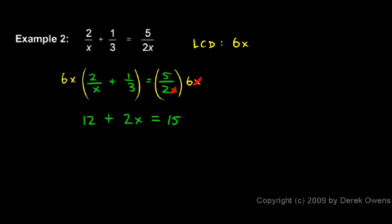So now our equation, our original problem, has been greatly simplified, and there's no fractions anymore. Multiplying by the least common denominator has cleared all of the fractions. So now I have 12 plus 2x equals 15.